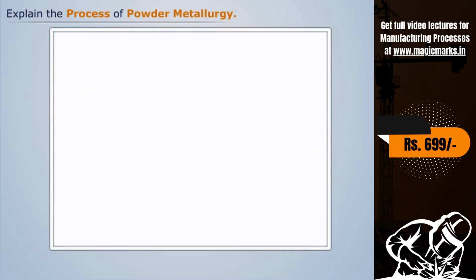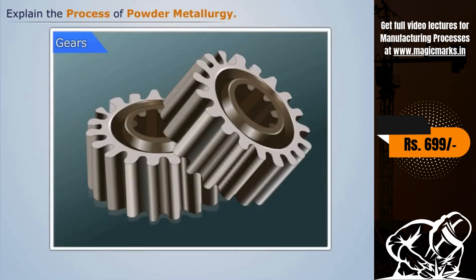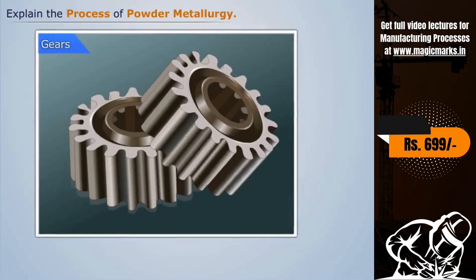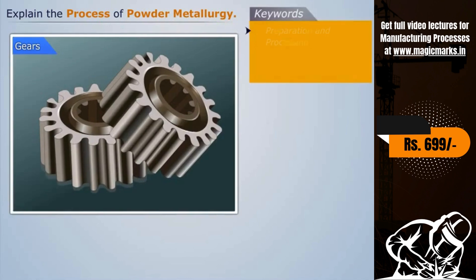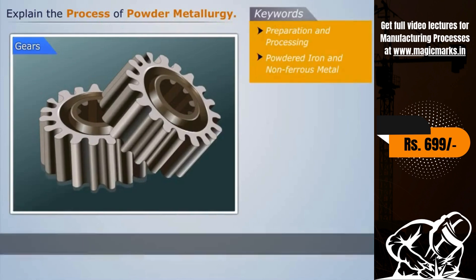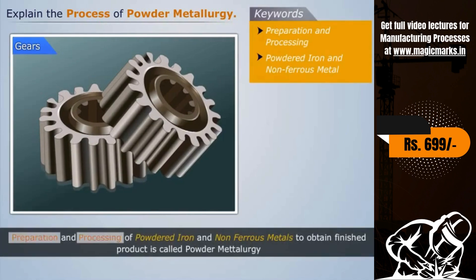Finally, some secondary processes like machining are done on the product and then the final product is produced. Thus, preparation and processing of powdered iron and non-ferrous metals to obtain a finished product is called powder metallurgy.